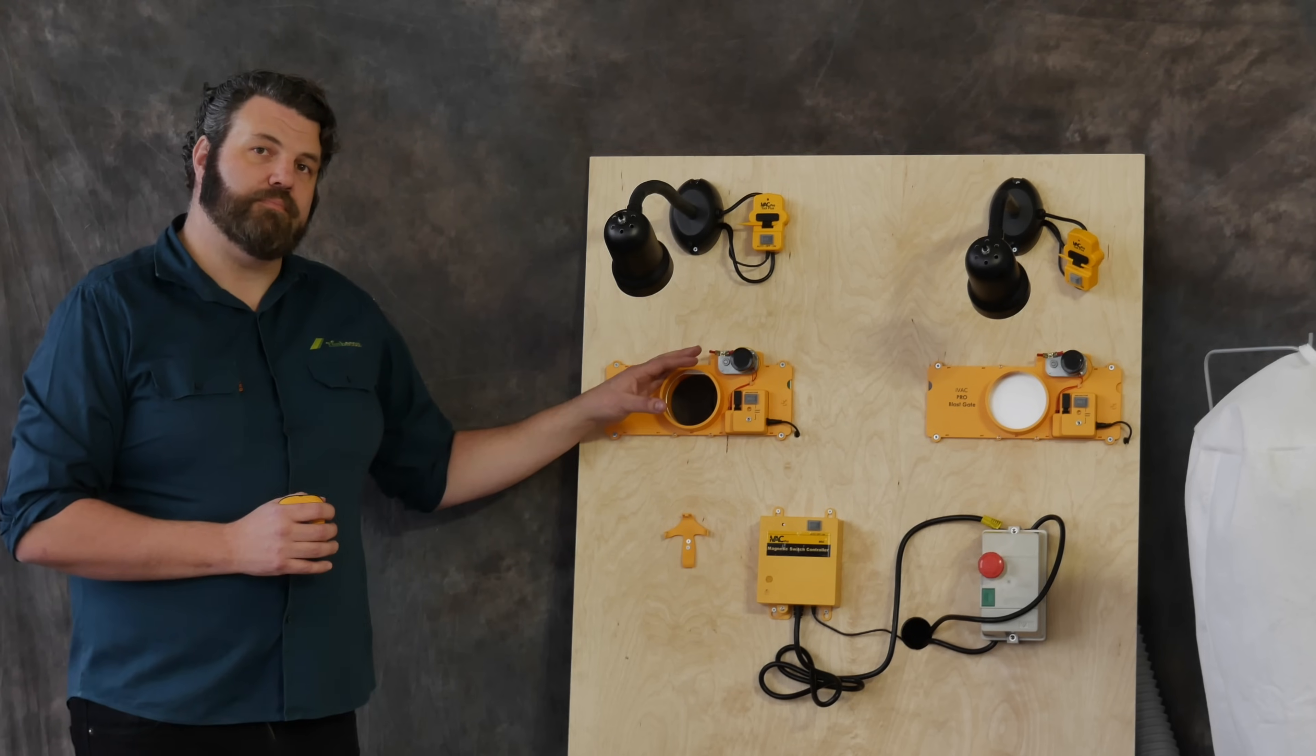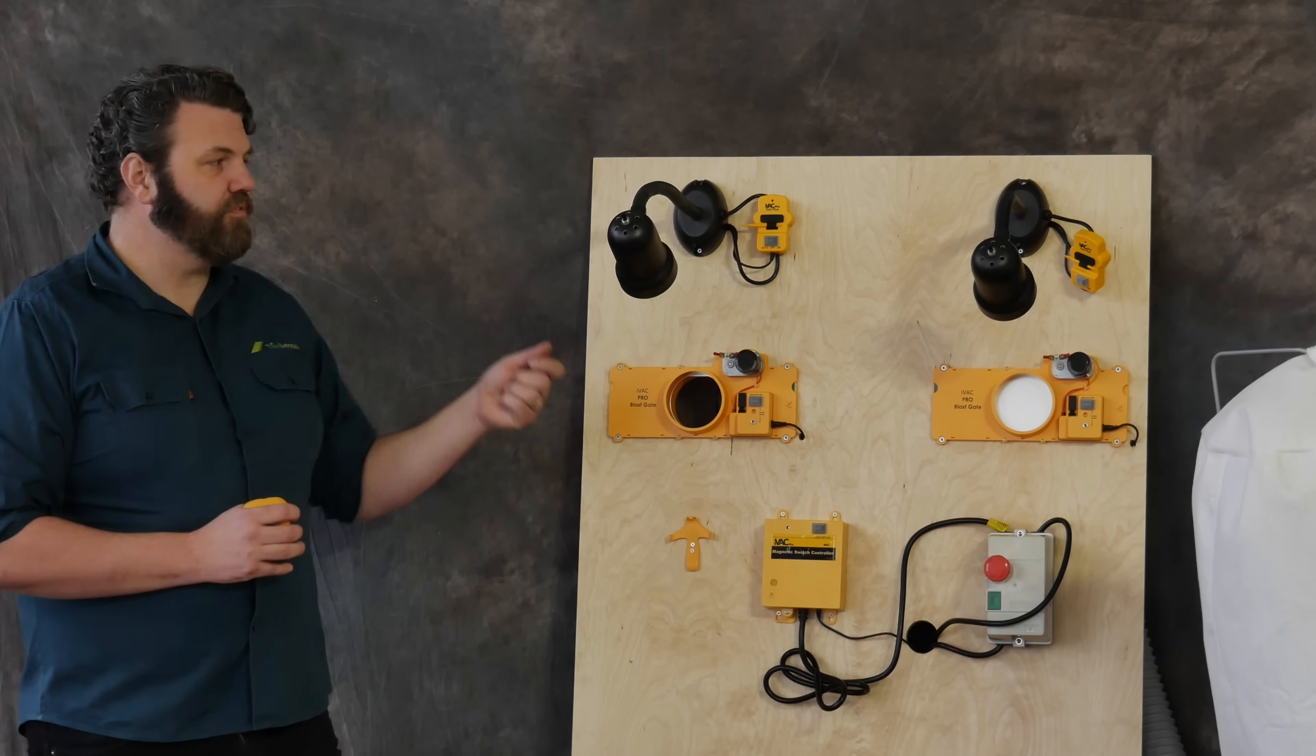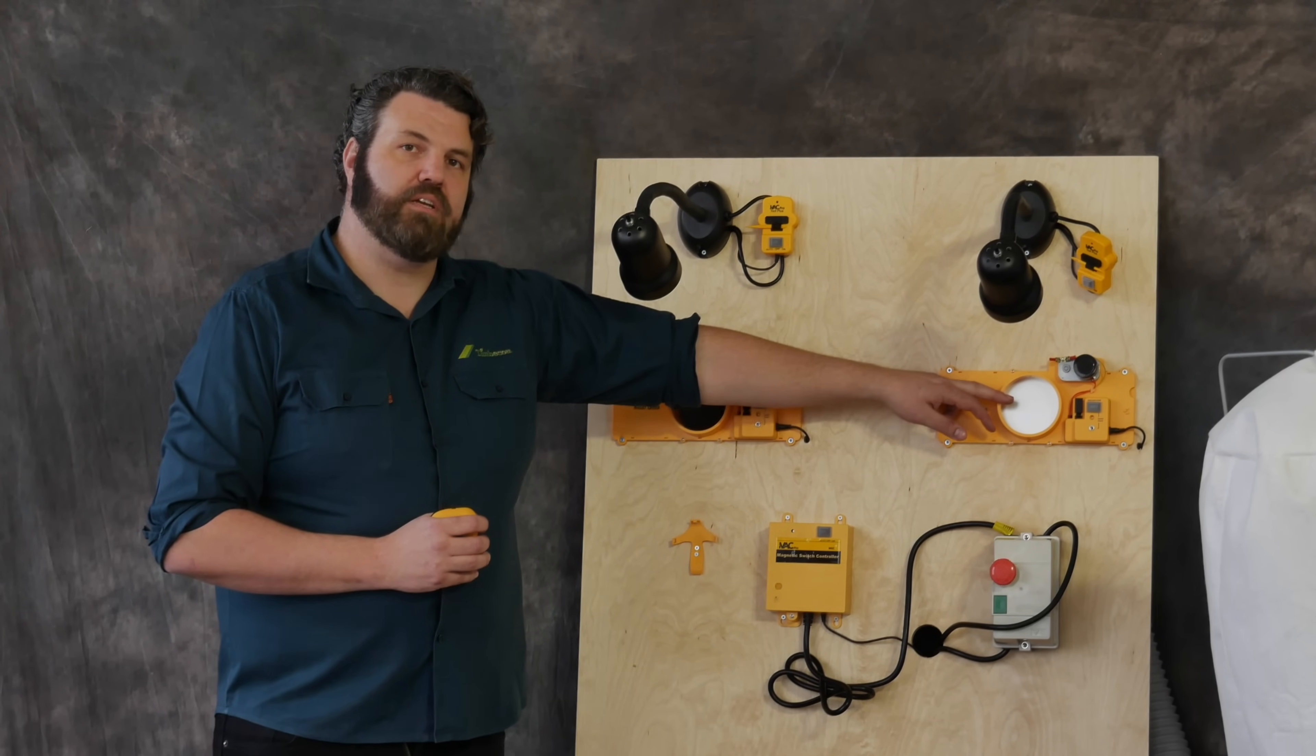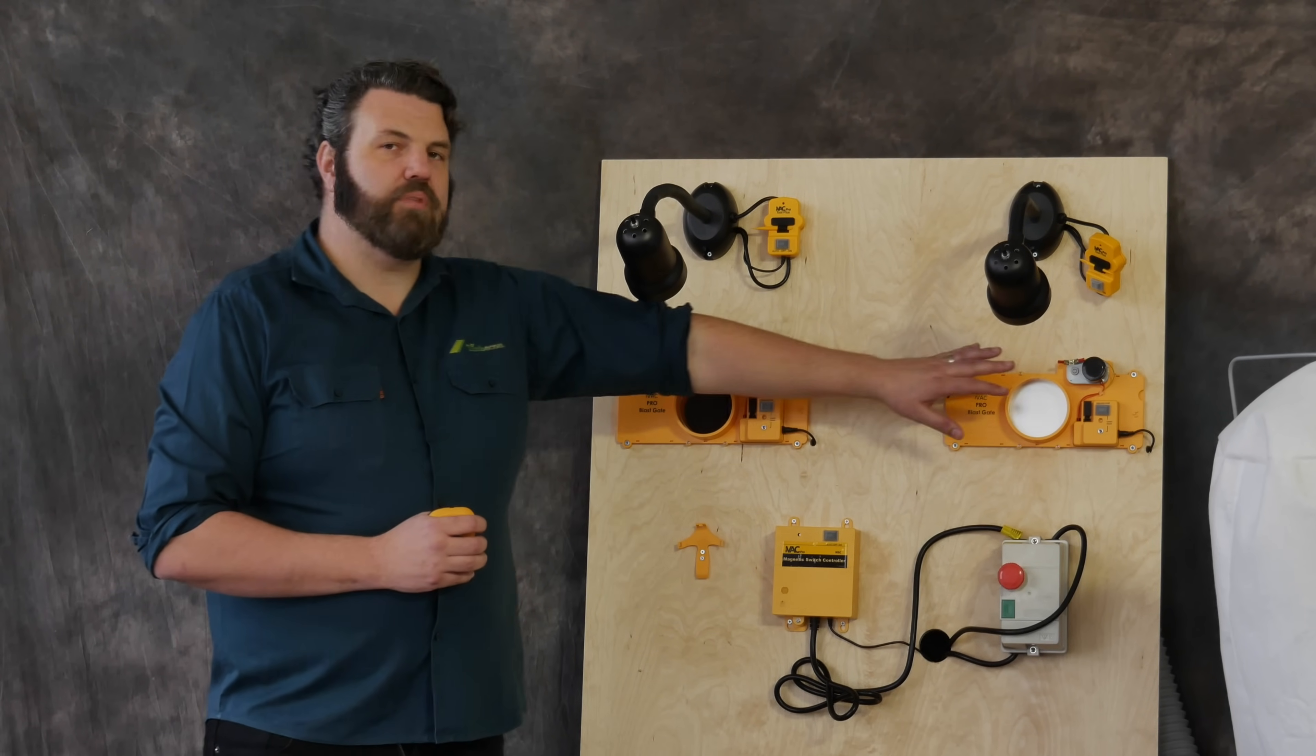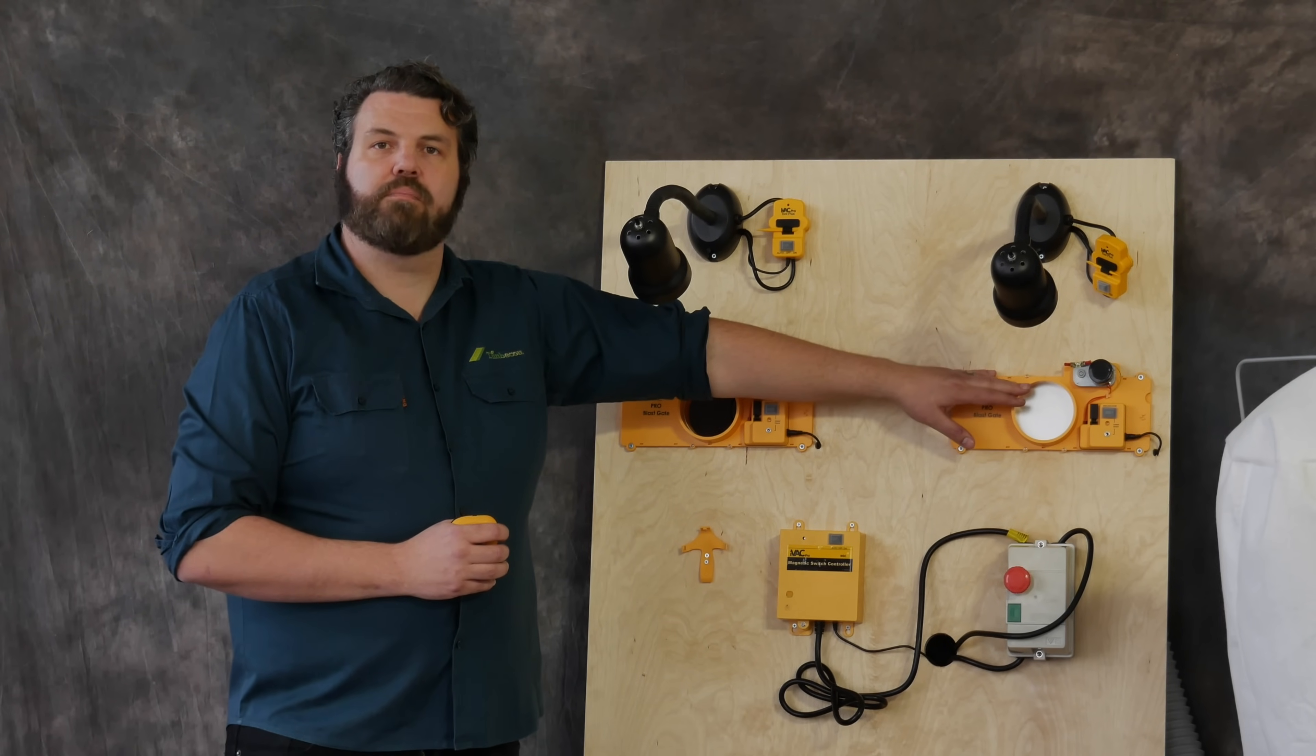Normally it's set to 50 seconds. What that means is when you turn your power tool off, the blast gate will remain open for 50 seconds after the power tool has been turned off, allowing the whole ducting to clear out before the blast gate will close again so you don't get any clogging when you come back to turn your dust extractor back on again.